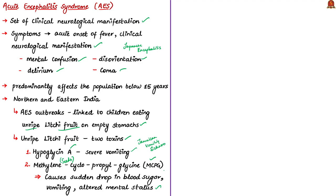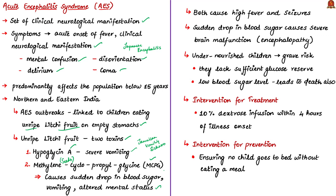A seizure is a sudden surge of electrical activity in the brain. The sudden drop in blood sugar causes severe brain malfunction, also called encephalopathy — meaning disease in the brain. The root word 'encephalo' means brain. The author states that the toxins in the lychee fruit cause serious problems overnight. Well-nourished children who eat the fruit are not affected even if they go to bed on an empty stomach, but undernourished children are at grave risk.